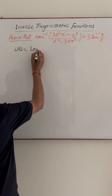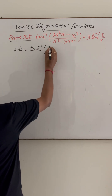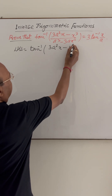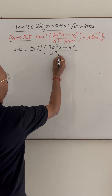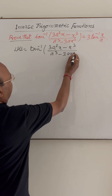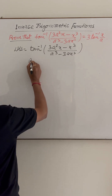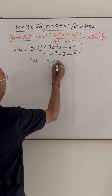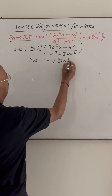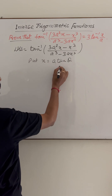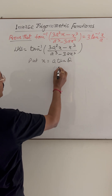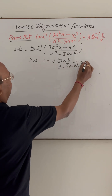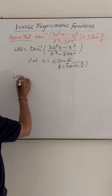The left hand side is tan inverse of (3a²x - x³) upon (a³ - 3ax²). Here we will put x equal to a·tan θ, so we get θ equal to tan inverse of x by a.